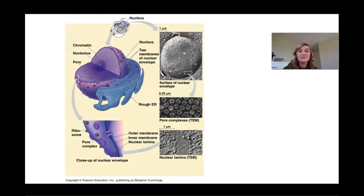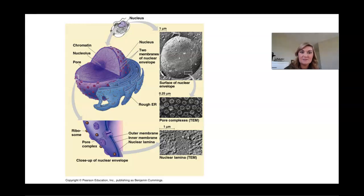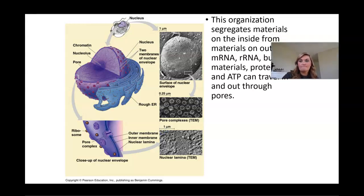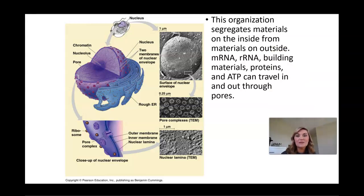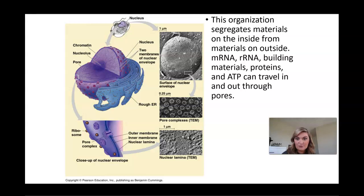Looking at the nucleus, you can see the nucleolus in the center, with pores around the nuclear membrane that allow different things in and out. Notice how the rough endoplasmic reticulum is attached. This organization helps segregate the materials inside the cell from the inside of the nucleus. The mRNA, rRNA, building materials, proteins, and ATP can all travel in and out through these nuclear pores to do what they need to do inside the nucleus or within the cell.